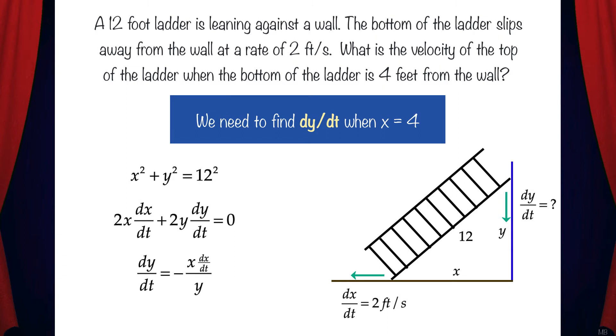At this stage, we can plug in. We know x equals 4 and dx/dt equals 2, but we need to find y. To do this, we'll use the Pythagorean theorem. We can plug in 4 for x and solve for y. This gives us 4 squared plus y squared equals 144 and that means y equals the square root of 128.